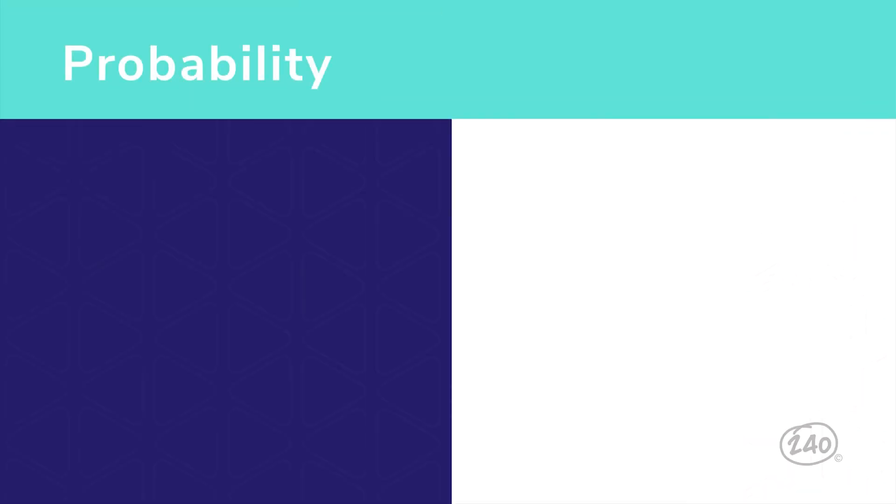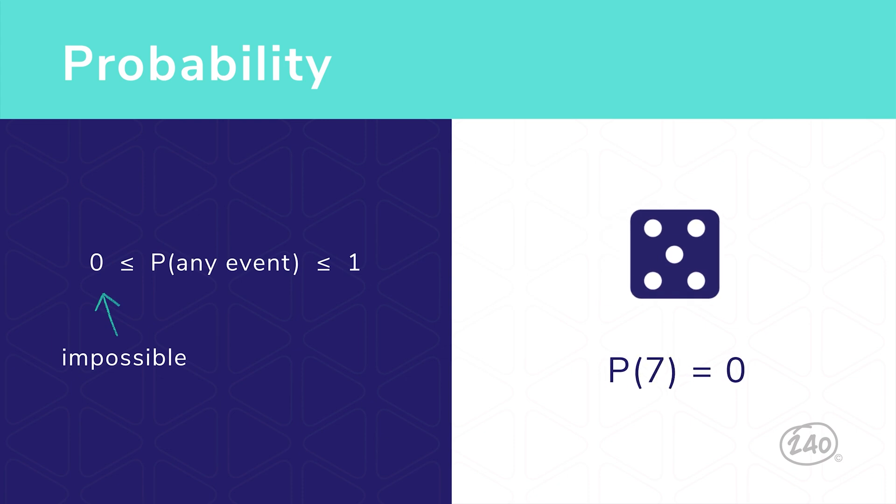All probabilities will fall between 0 and 1. A probability of 0 means that an outcome is impossible. For example, let's think about rolling a die. The probability of getting 7 on a dice roll is 0, since there's no 7 face. On the other hand, a probability of 1 means that an outcome is certain, or guaranteed. The probability that a single die roll results in a number less than 10 is 1, since all of the numbers on a six-sided die are less than 10.